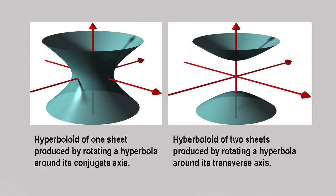Moving on now to three dimensions, a hyperboloid is a quadratic surface of which there are two basic forms, a hyperboloid of one sheet generated by spinning a hyperbola around its conjugate axis, and a hyperboloid of two sheets produced by rotating a hyperbola about its transverse axis.